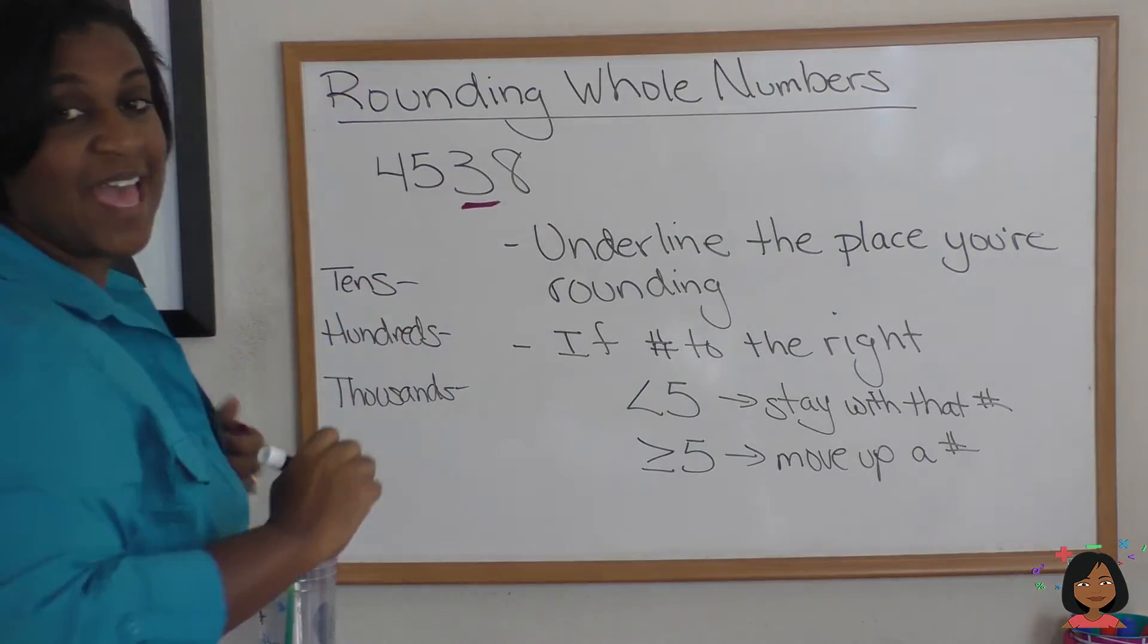Let's take a look at some of the rules regarding rounding whole numbers. So here are the rules for rounding whole numbers. First, I want you to underline the place that you're rounding. So let's say I wanted to round this number 4538 to the nearest tens place. The first thing I want you to do is underline the place you're rounding.